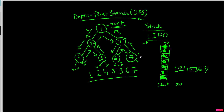At this point we don't have any other nodes to traverse and the stack is empty, meaning our DFS is completed. This is our DFS for this binary tree.